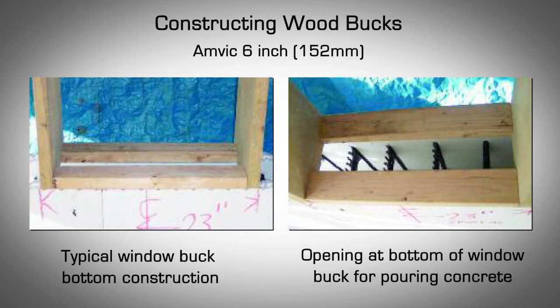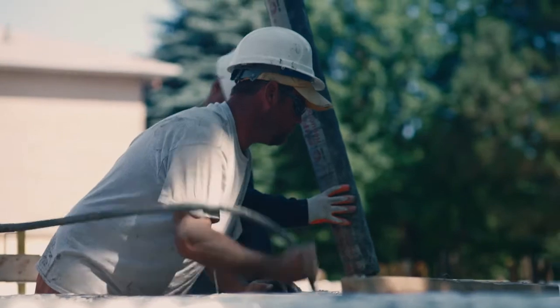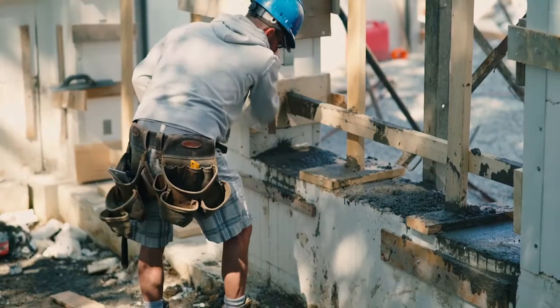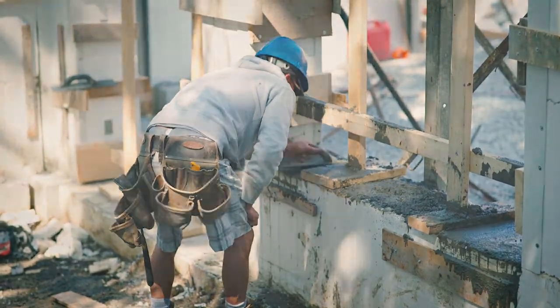Constructing Wood Bucks: When constructing a wood buck for 6-inch block, trim 2x12 stock lumber for the top and sides of the buck, since the total thickness of the block is 11 inches. This may be done using a table saw. The bottom of the buck should be constructed using two pressure treated 2x4s, leaving an opening at the bottom of the window through which concrete will be poured and consolidated using a vibrator.